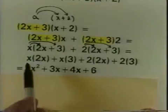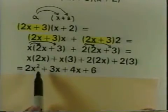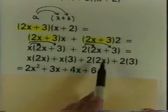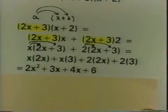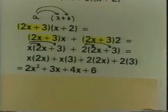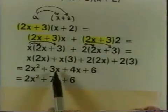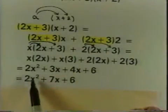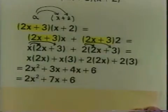Performing the multiplication: x times 2x is 2x squared, x times 3 is 3x, 2 times 2x is 4x, and 2 times 3 is 6. Now I can combine the like terms: 3x plus 4x is 7x. I get as my answer 2x squared plus 7x plus 6.